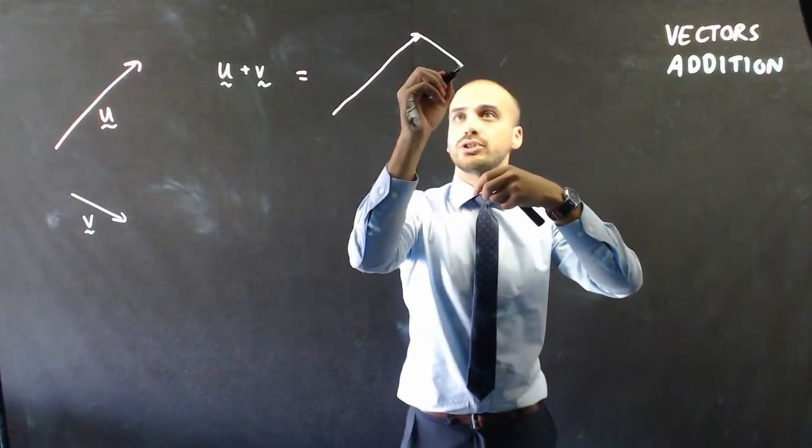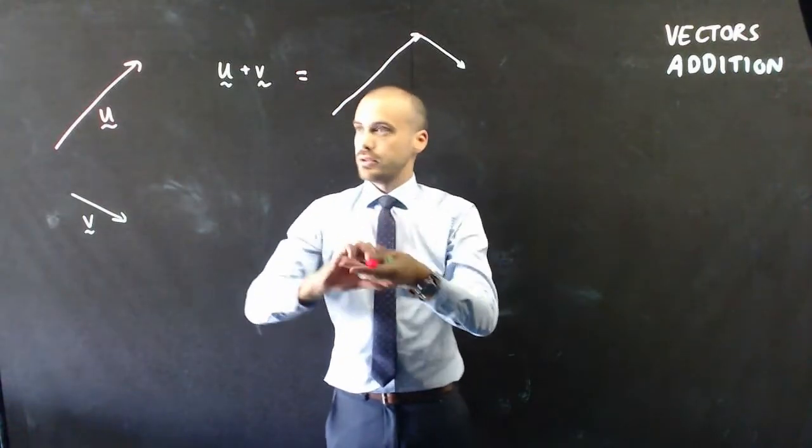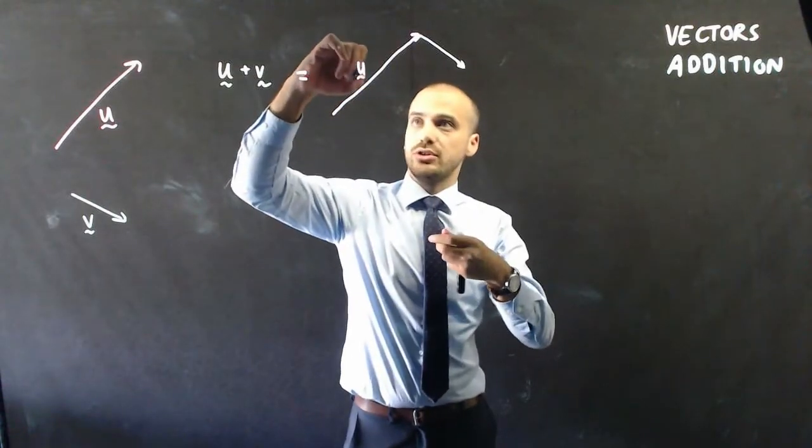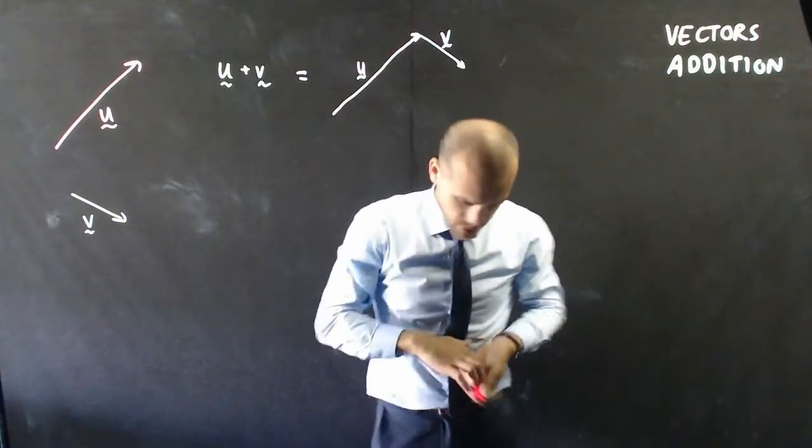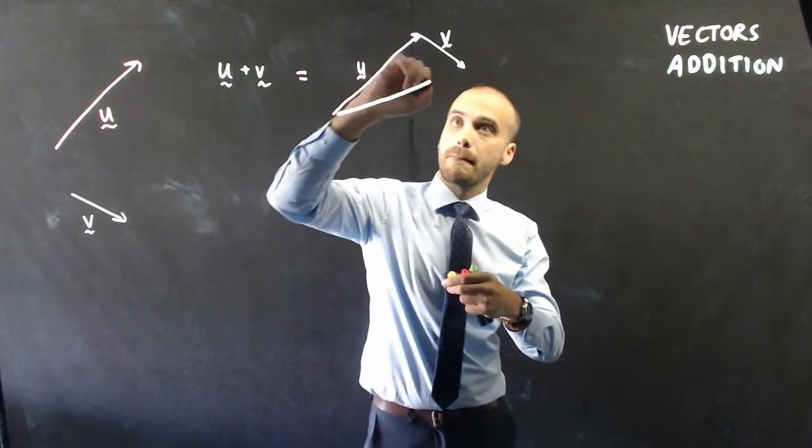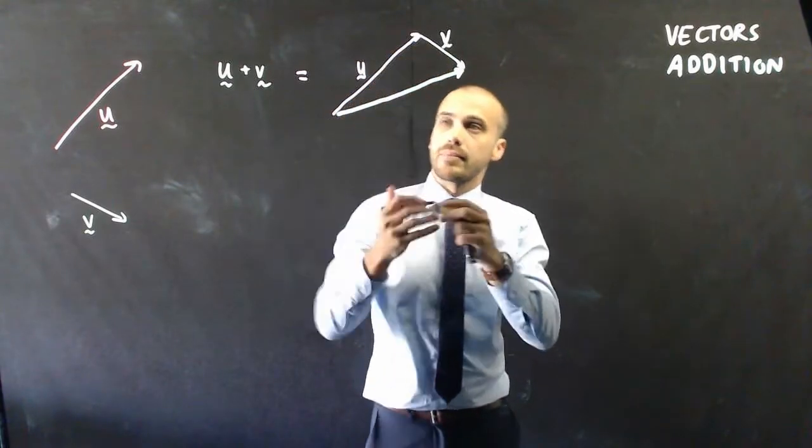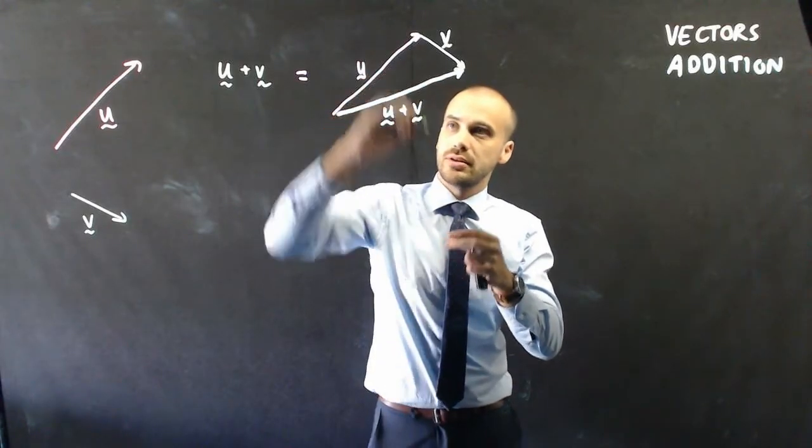Try to draw it pretty much the same. Okay, so, that's vector u, this is vector v, and this is vector u plus v.